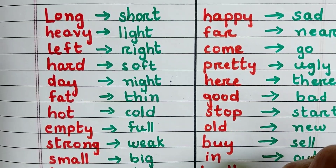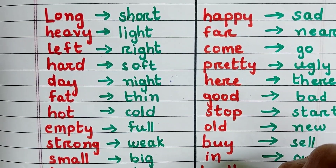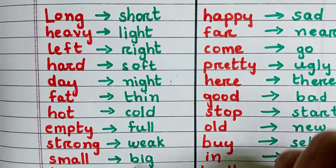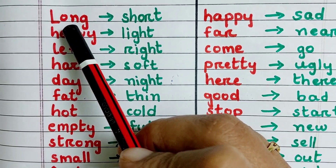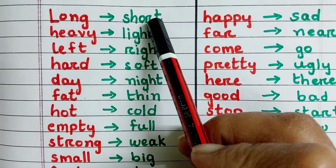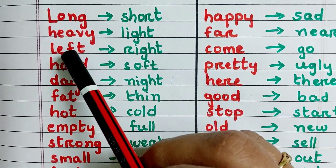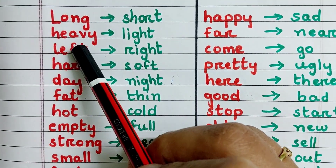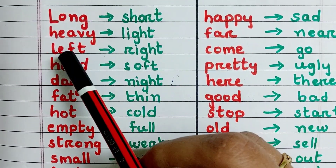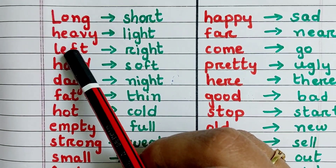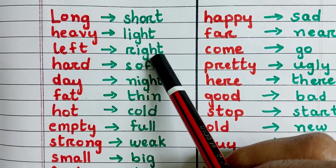Opposite words, or antonyms. Long, short. Heavy, light. Left, right.